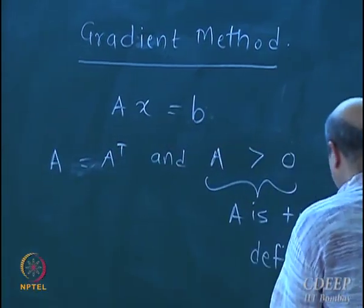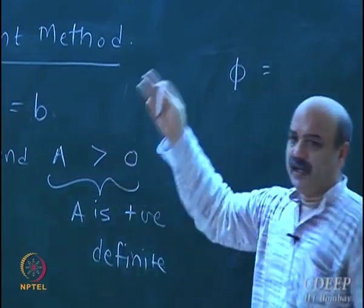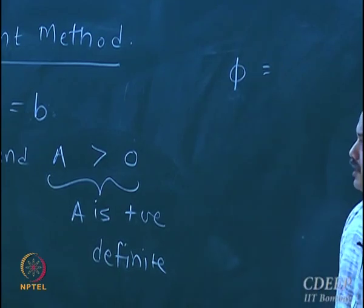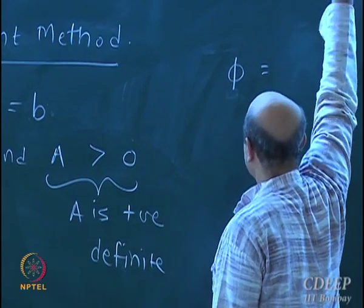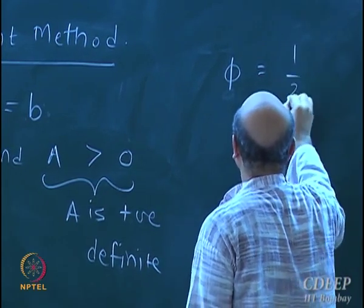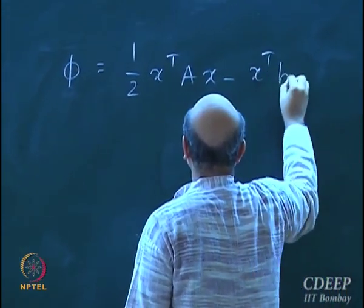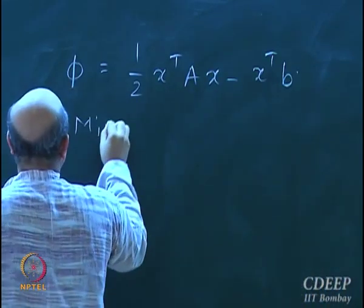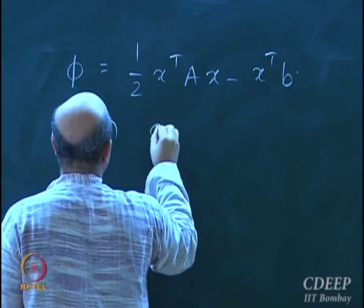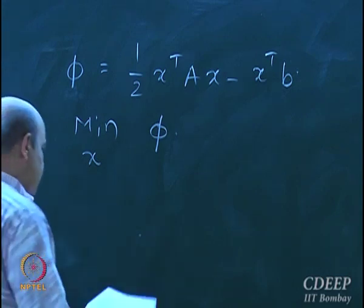We formulate an objective function. We know what to do if A is not symmetric positive definite — we pre-multiply both sides by A transpose to get a modified problem. The objective function phi is one-half x transpose Ax minus x transpose B, and we want to minimize this with respect to x using the gradient method.